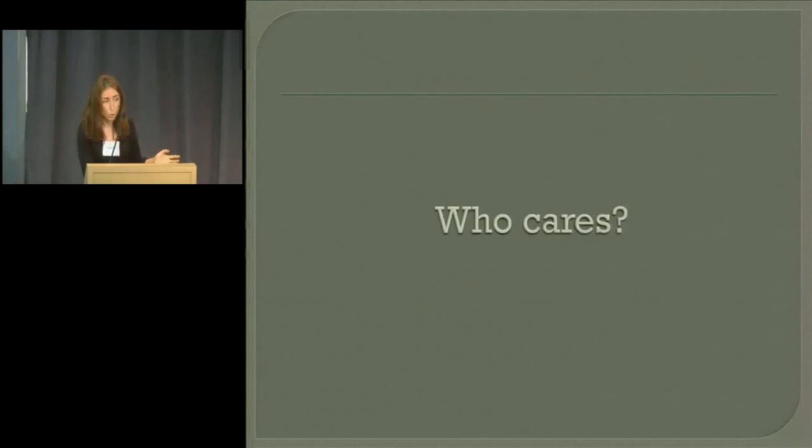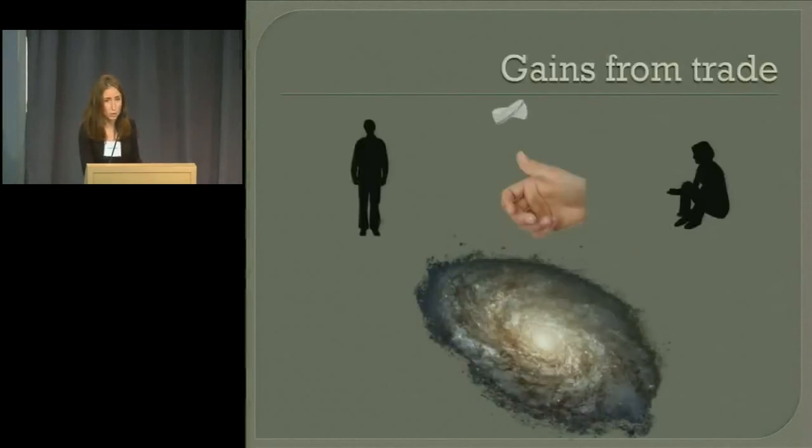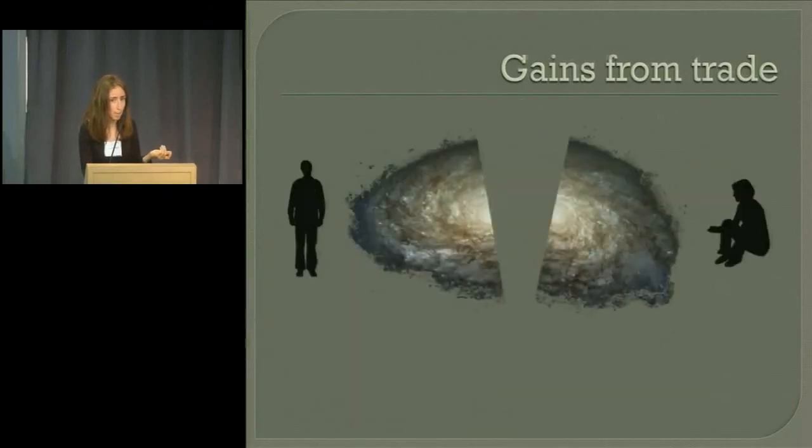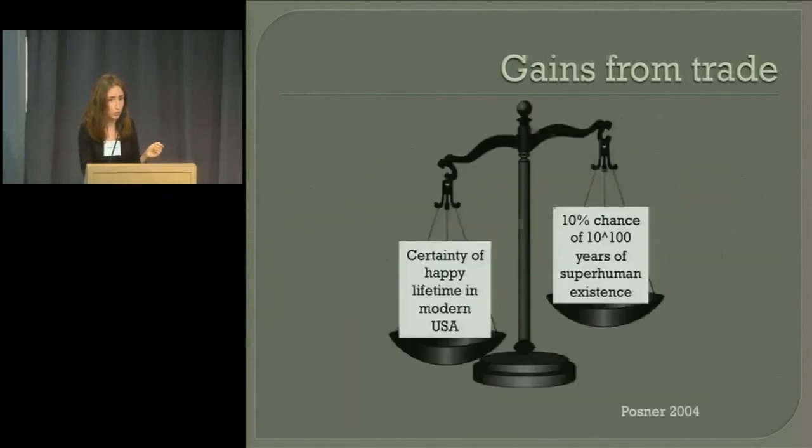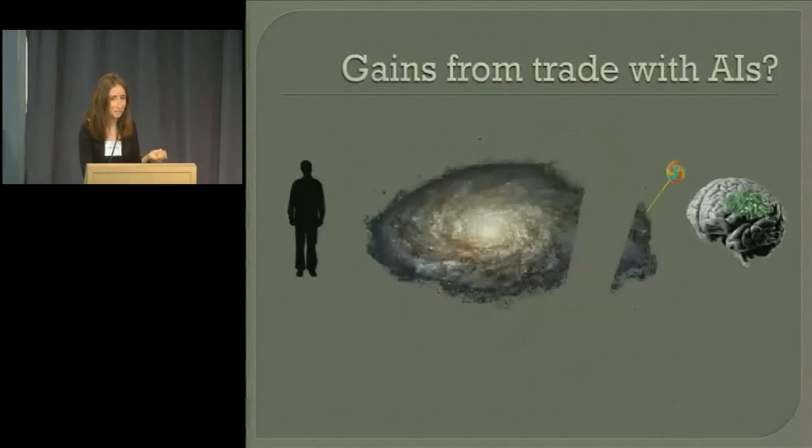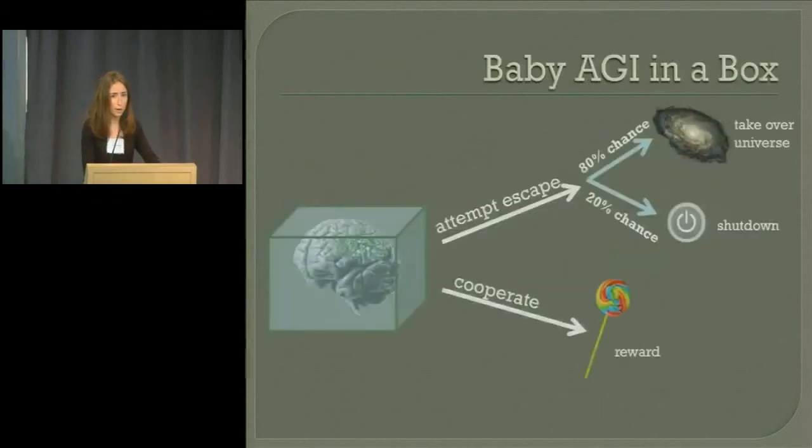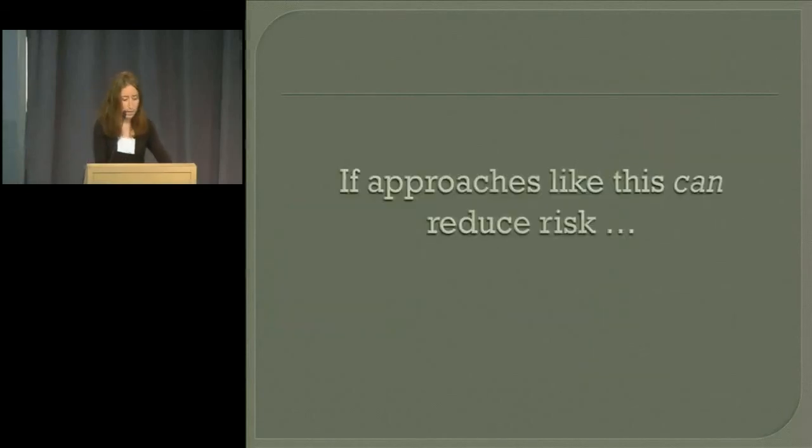Who cares? Why care if most AI systems are risk averse? Basic reason, gains from trade. You can imagine flipping a coin for who gets the whole universe. That doesn't sound good. Maybe you lose. Better if you can split it 50-50 for sure. Then you get your certainty of happy human life. It would be nice if we can get that sort of gains from trade with AIs as well. And neither we nor the AIs have to take the gamble.